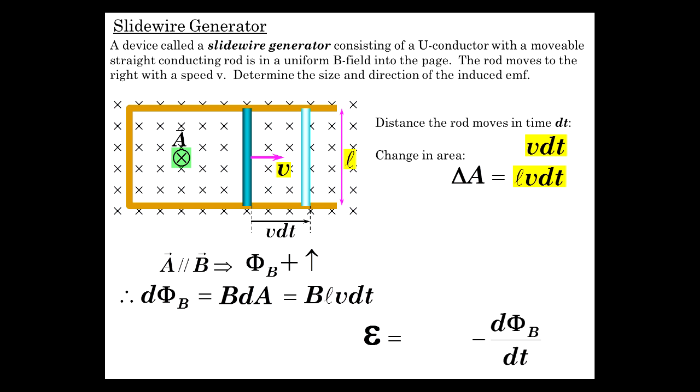And dA is lvdt. So there is our differential flux. The EMF induced is -dΦ_B/dt. So you just take this quantity and divide by dt, and you get -Blv. And there's our result. That is the EMF induced by a moving wire: magnetic field B times the length of the wire times its velocity. It's a very useful result.